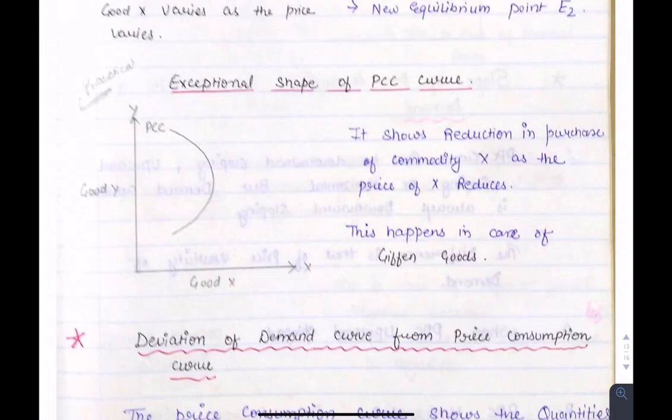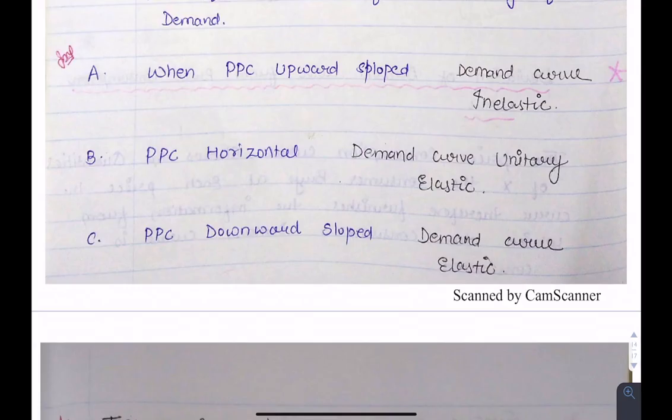The PCC has an exceptional shape — it can be backward bending. This happens in the case of a Giffen good, because as we increase the price of the good, our consumption will increase. But if the price is reduced, consumption will also decrease.